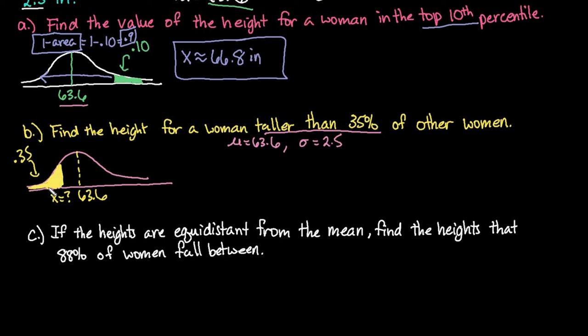So this time because our value is 35% is less than 50%. We know that our z score would be negative. But again, we're looking for the x value. So our x value isn't going to be negative. It just means that it's going to be below the 63.6.